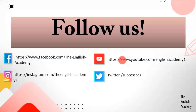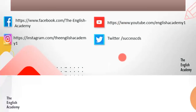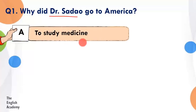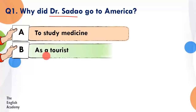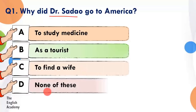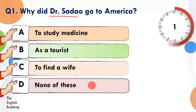Now let us start with this quiz. Question number 1: Why did Dr. Sadao go to America? Option A: to study medicine. Option B: as a tourist. Option C: to find a wife. Option D: none of these. The 10 seconds begins now.